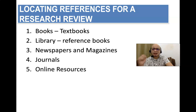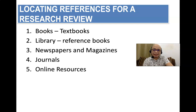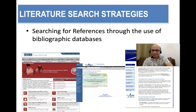Online resources — you have to be careful. Not all websites are credible. For example, I've seen graduate students citing Wikipedia. That is not really acceptable. We call them gray literature, and we do not want to cite gray literature in our study. These are some of the websites where you can actually search for references through the use of bibliographic databases such as EBSCO and PubMed. These are some of the most popular.